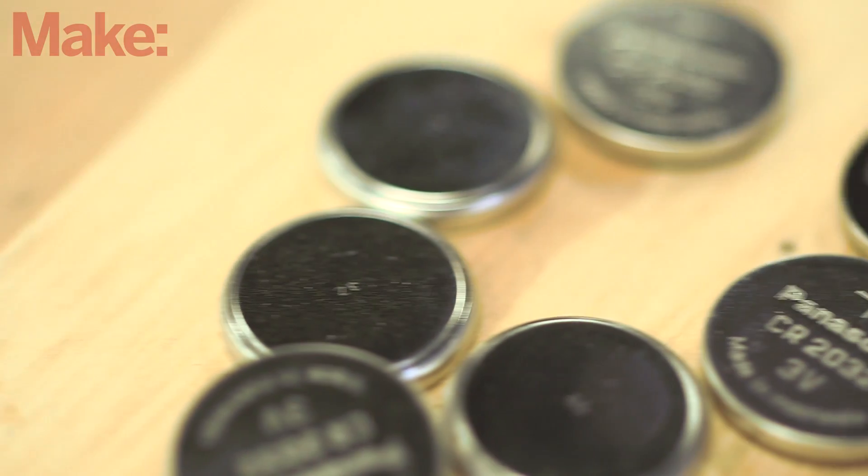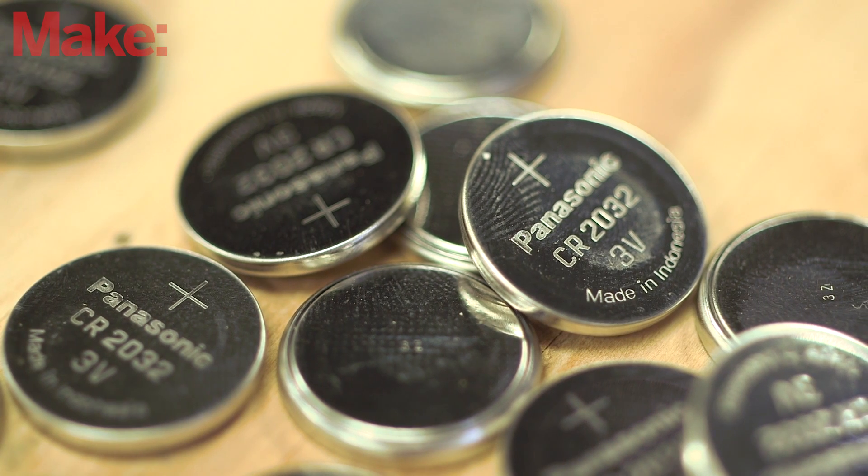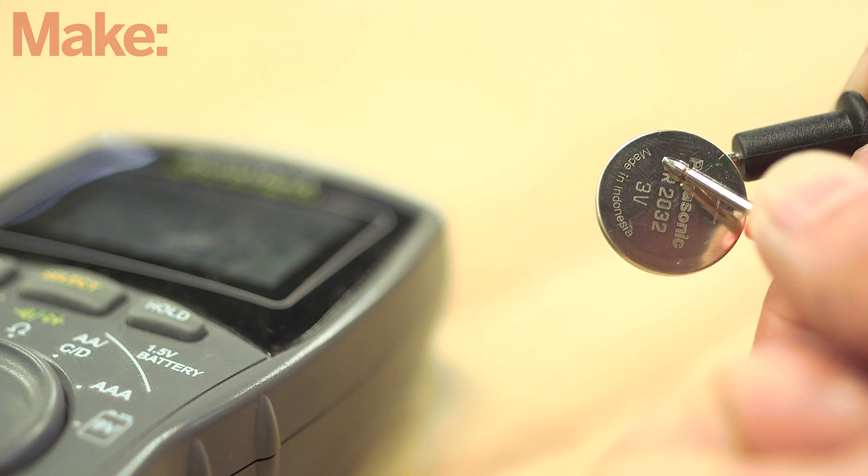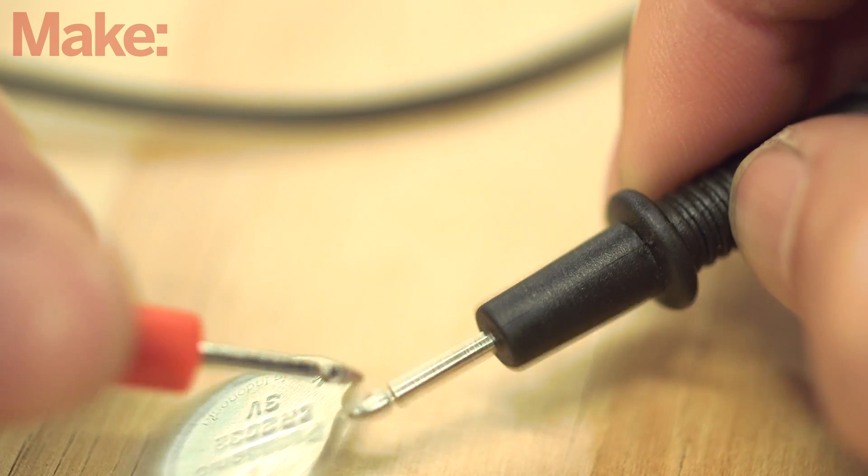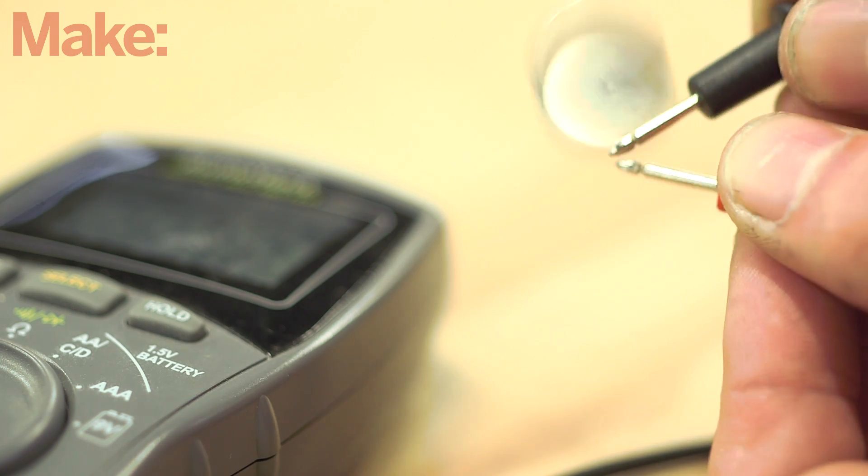If you've ever had to sort through a stash of 3-volt batteries, you know that they are not the easiest things to test. Watch batteries and other coin cells are small and fidgety, and can be really awkward to pinch between voltmeter probes to test their polarity and to see if they have any useful life left.